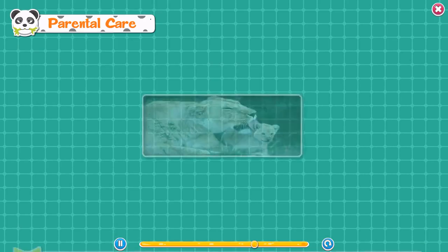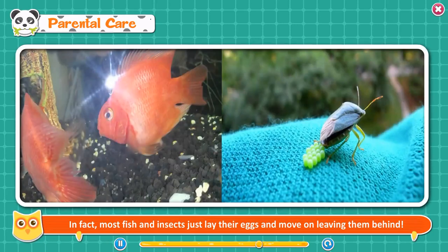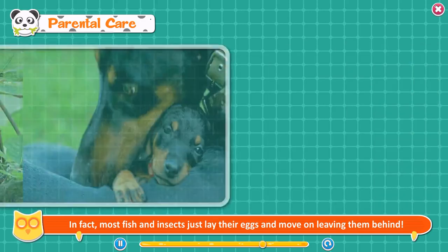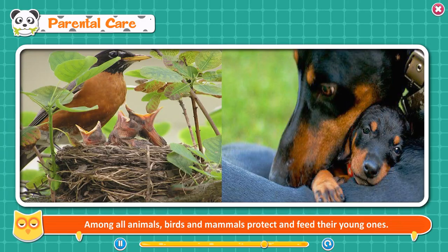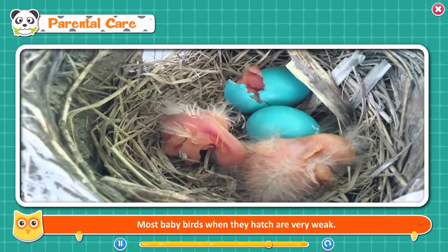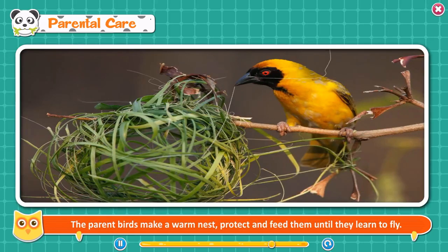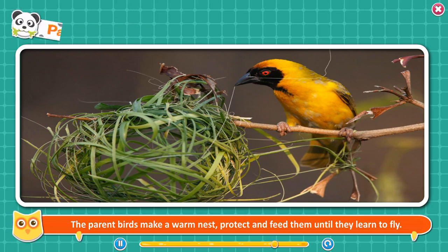Parental care. Not all animals take care of their offspring. Most fish and insects just lay their eggs and move on, leaving them behind. Among all animals, birds and mammals protect and feed their young ones. Most baby birds, when they hatch, are very weak. The parent birds make a warm nest, protect, and feed them until they learn to fly.